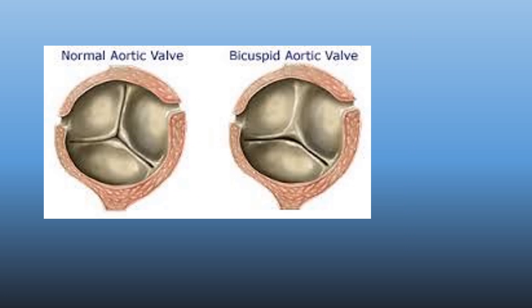These are the cartoons of a normal aortic valve and a bicuspid aortic valve in short axis view, examining when the leaflets are closed — that is, in diastole. In the normal aortic valve, we can see the three leaflets quite clearly. But in the bicuspid aortic valve, the raphe gives a false impression of a tricuspid leaflet, though actually the valve is bicuspid.